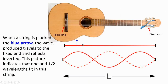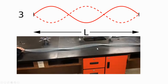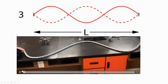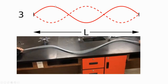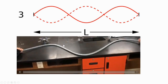When a string is plucked at the blue arrow in this location, the wave produced travels to the end and reflects. This picture indicates that one and a half wavelengths fit in this string — one and a half — and these come back inverted because both ends are fixed. This animation illustrates the formation of one and a half wavelengths in this string.